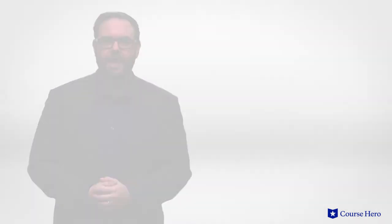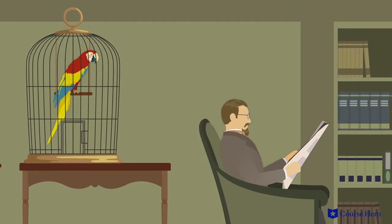In chapter one of The Awakening, the novel opens as Léonce Pontellier, a guest at Mrs. Lebrun's cottages on Grand Isle, attempts to read his newspaper in peace.